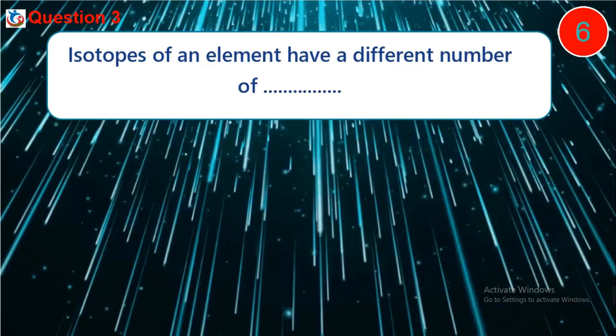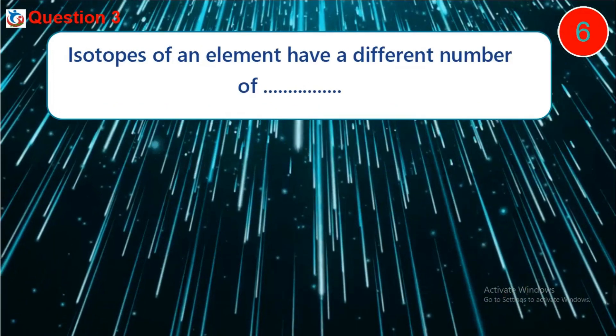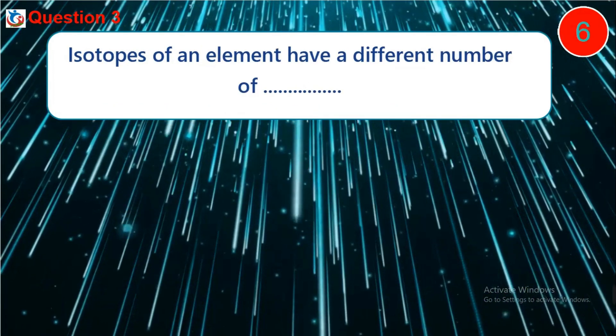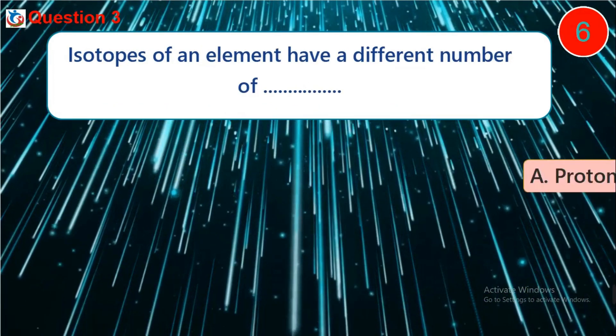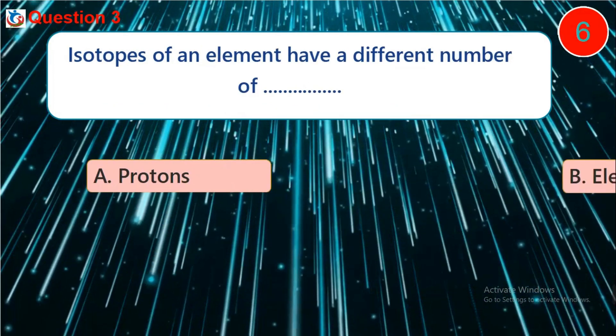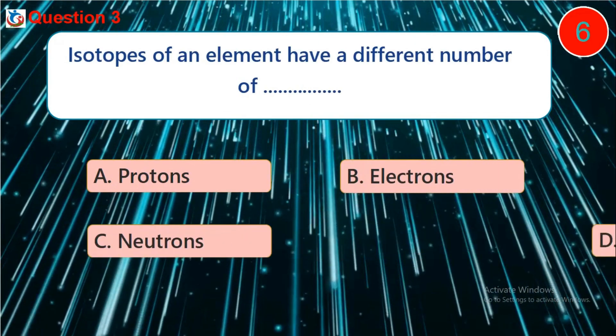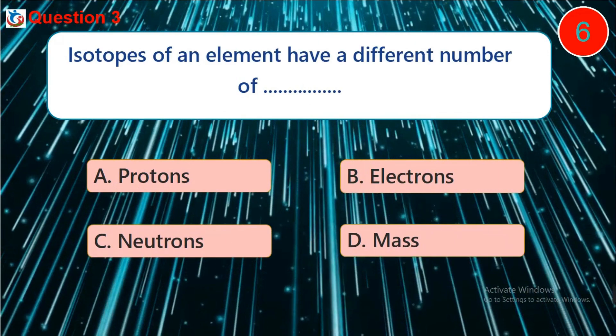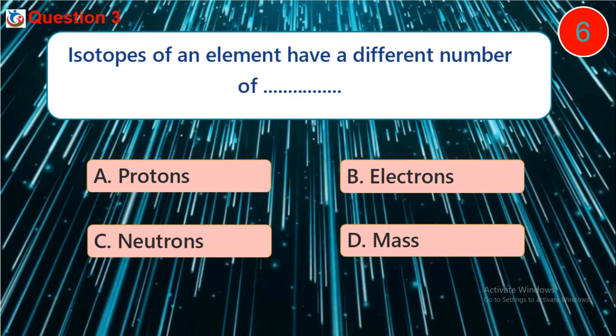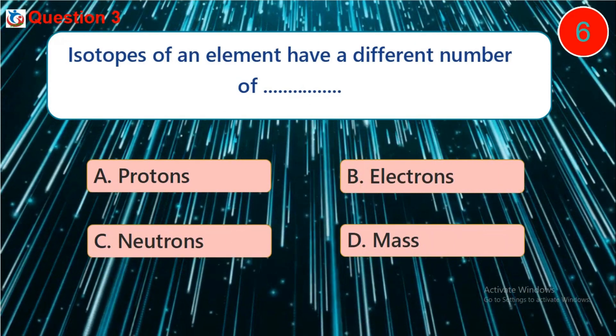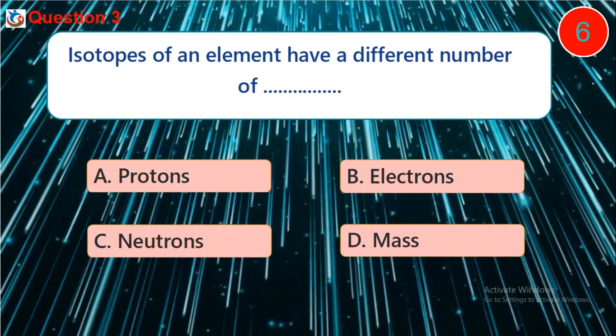Question three: isotopes of an element have a different number of dash. A. protons, B. electrons, C. neutrons, D. mass.